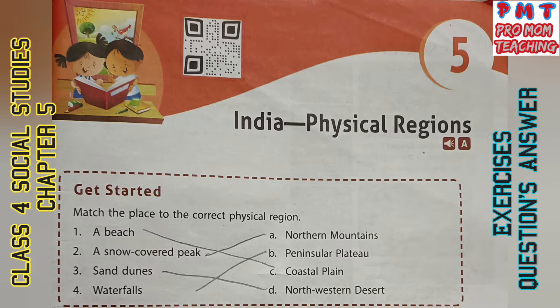Match the place to the correct physical region. First, a beach — match it with coastal plain. Second, a snow-covered peak — match it with northern mountains. Third, sand dunes — match it with north-western desert. Fourth, waterfalls — match it with peninsular plateau.